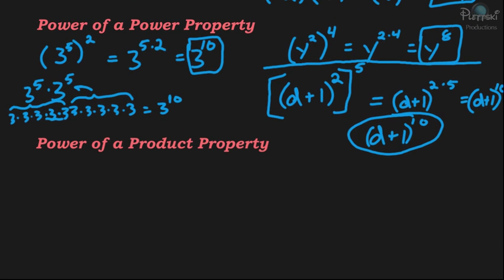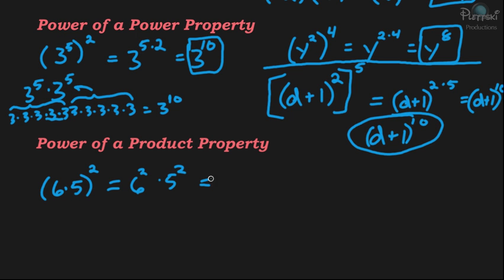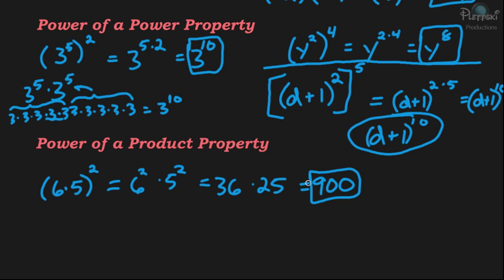The last property is the power of a product property. If you have a product raised to a power, find the power of each factor and then multiply. For example, (6 times 5) squared equals 6 squared times 5 squared. Since 6 squared is 36 and 5 squared is 25, multiplying 36 times 25 gives 900.